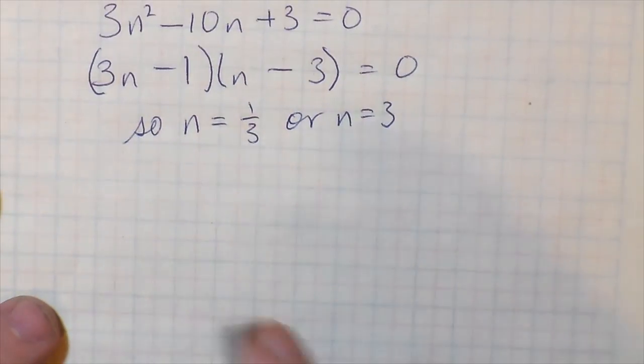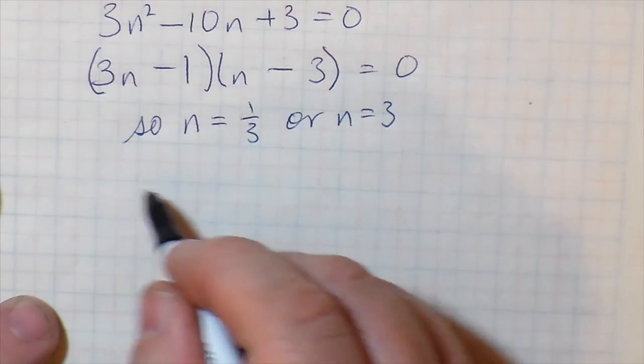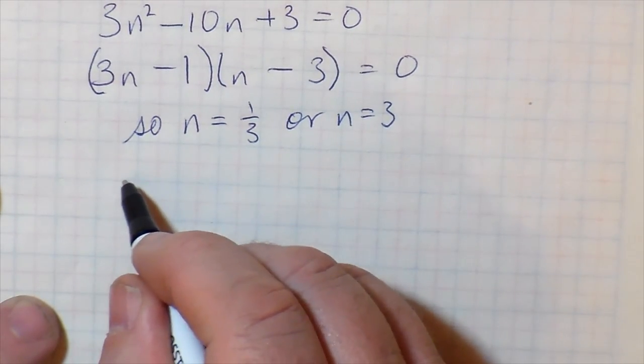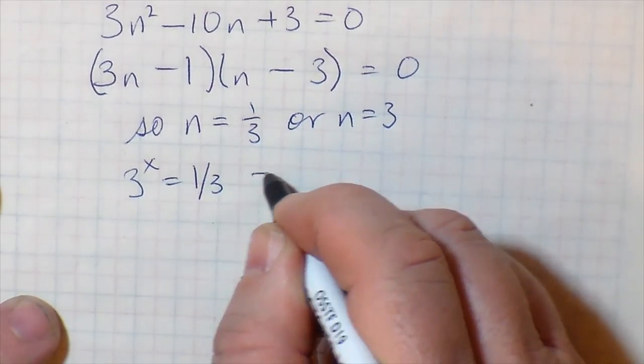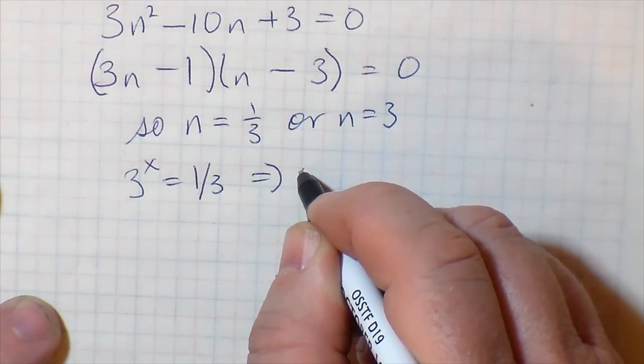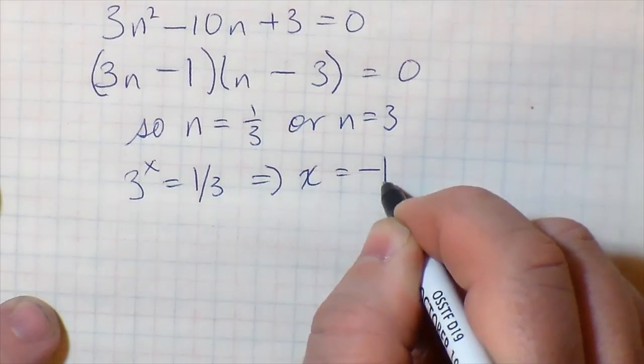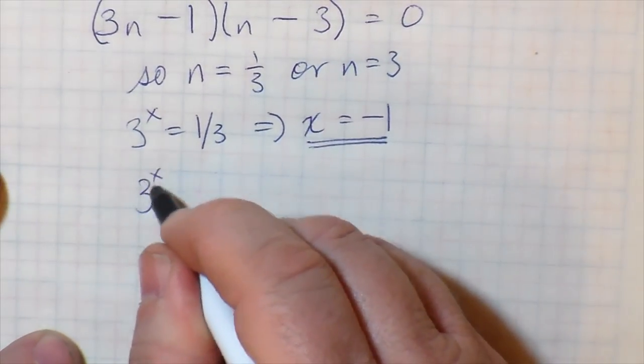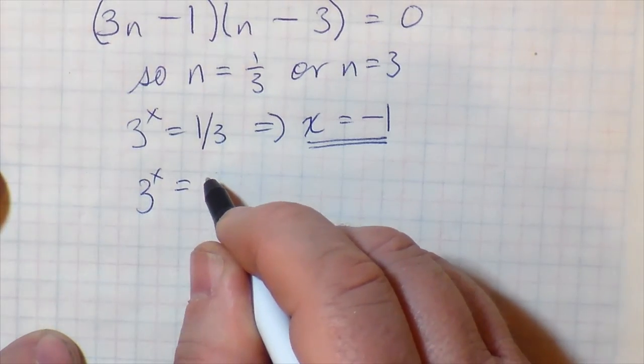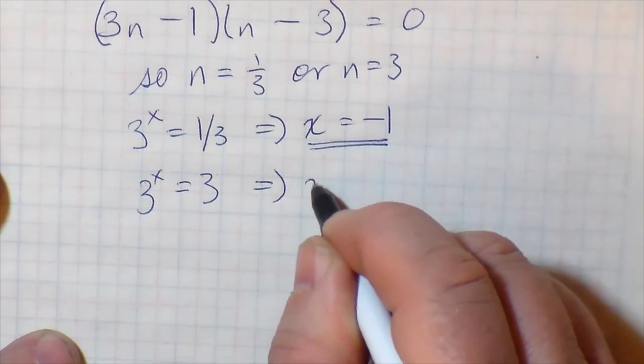So we have 3n minus 1, that makes a third. n minus 3 gives us the factor 3. So 3 to the x, if it's equal to 1 third, then x would be equal to negative 1. 3 to the negative 1 is 1 third. And if 3 to the x equals 3, then that's like saying 3 to the 1 is 3. So x equals 1.